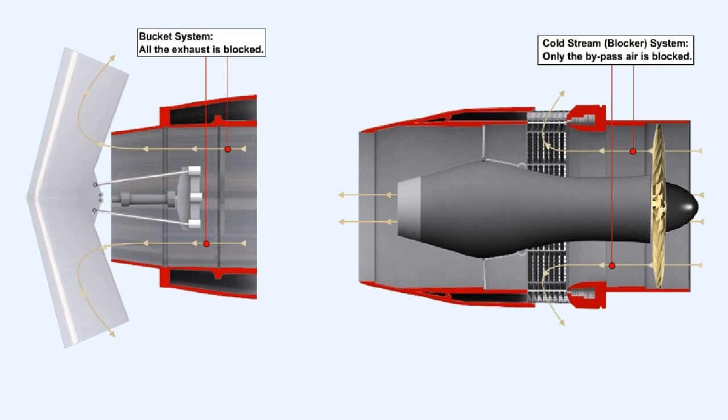the blocker system, as its name suggests, blocks and diverts the cold bypass airstream only.